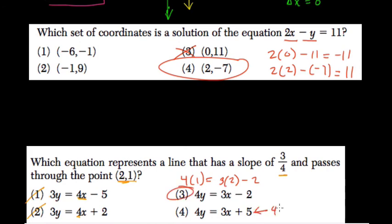If we try in the other one, we get 4 times 1 equals 3 times 2 plus 5. And that's not true because 3 times 2 is 6, plus 5 is 11. And that doesn't equal 4, so that wouldn't be a solution there.